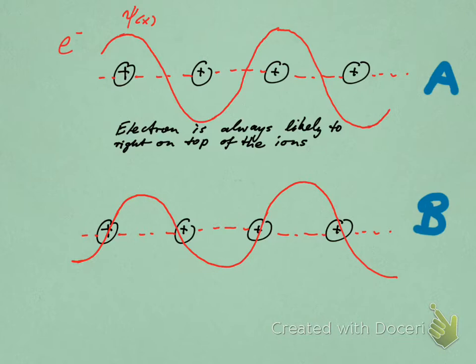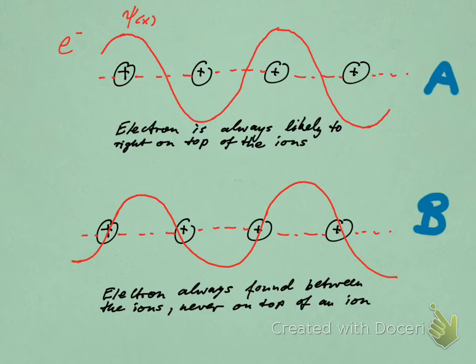Well, if you notice here in state A, the electron is always likely to be right on top of an ion. If you think in terms of probability density, the probability density is always maximized right on top of an ion, in the vicinity of an ion. Whereas down here, the electrons are always found in between the ions, never on top of an ion but always in between. So here again we would say that the probability density is maximized in the region between neighboring ions.